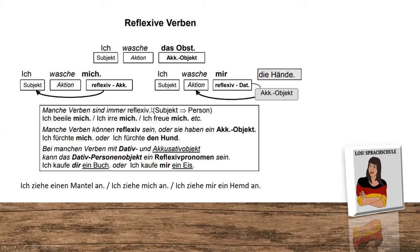So let's start with the really basic. When we say, for example, 'Ich wasche das Obst' — I wash the fruit — we know we have our typical sentence: subject, verb, and the object. In this case, we have an accusative object because the verb requires it.